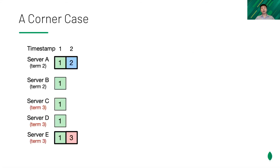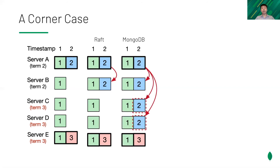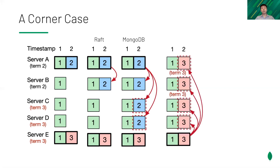Let's see an example of the op-logs on five nodes. Each box represents an entry with its term. Initially, server E is the latest primary in term 3, while server A is the stale primary and doesn't know of term 3. In Raft, only server B can replicate the blue entry. In MongoDB, however, servers would take the blue entry even though some of them have voted in term 3. Now, the blue entry could be considered as committed by server A, but it can be overwritten by the right entry later. Without more changes from Raft, this would violate safety. This new case is unique to MongoDB and would not happen in Raft, demonstrating that modifying Raft's data replication isn't trivial.